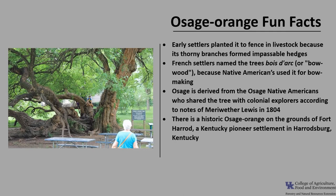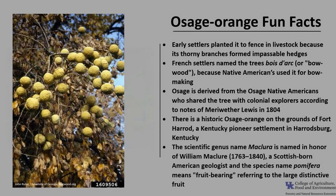There are numerous historic Osage Orange trees, including one on the grounds of Fort Harrod, a Kentucky pioneer settlement in Harrodsburg, Kentucky. The scientific genus name Maclura is named in honor of William Maclure (1763–1840), a Scottish-born American geologist, and the species name pomifera means fruit-bearing, referring to the large distinctive fruit.